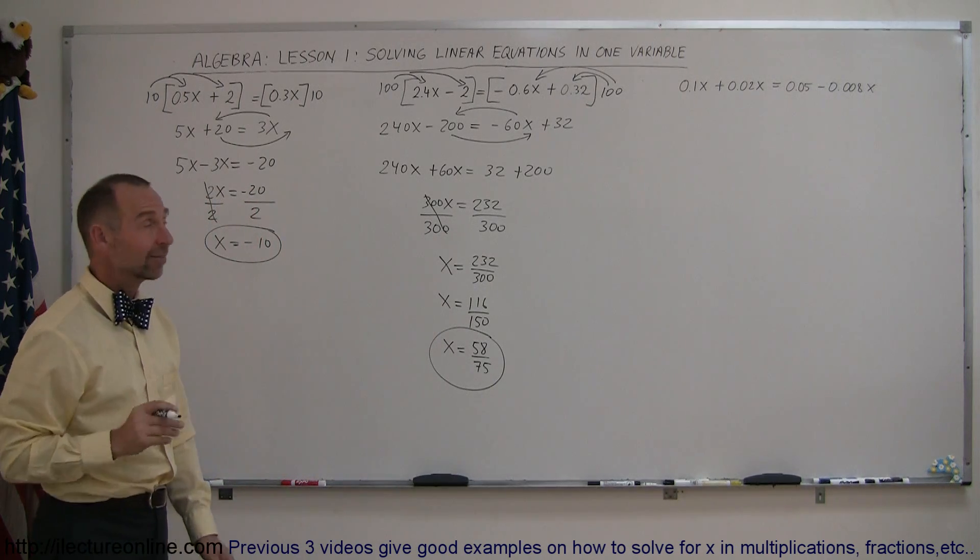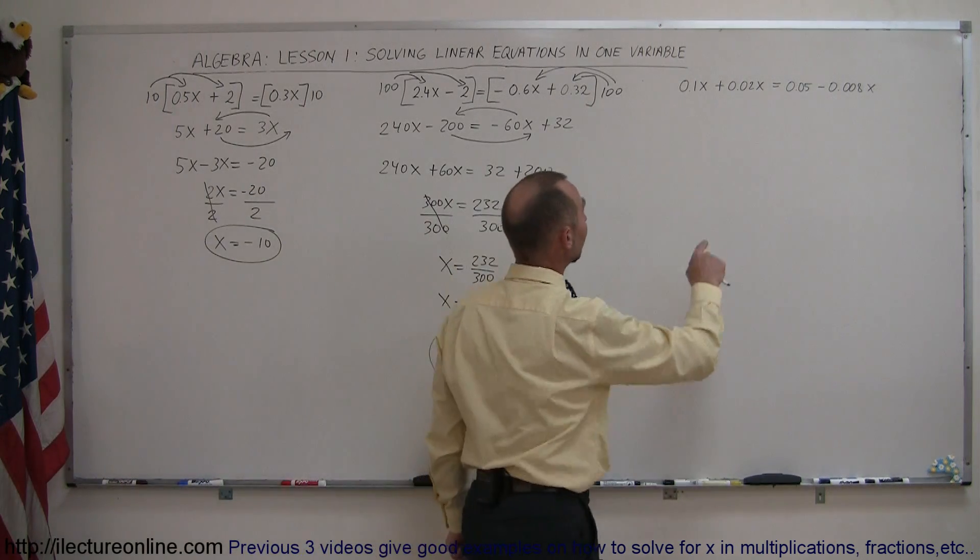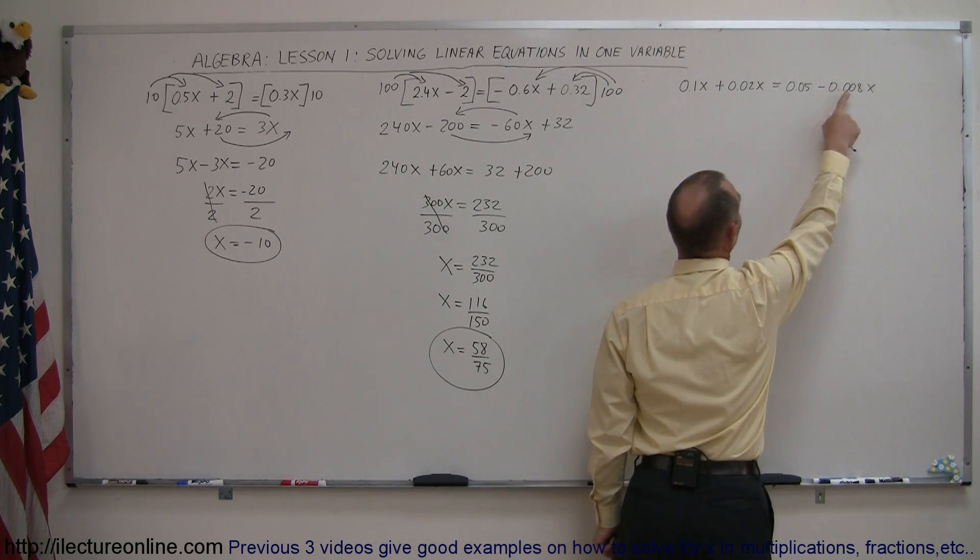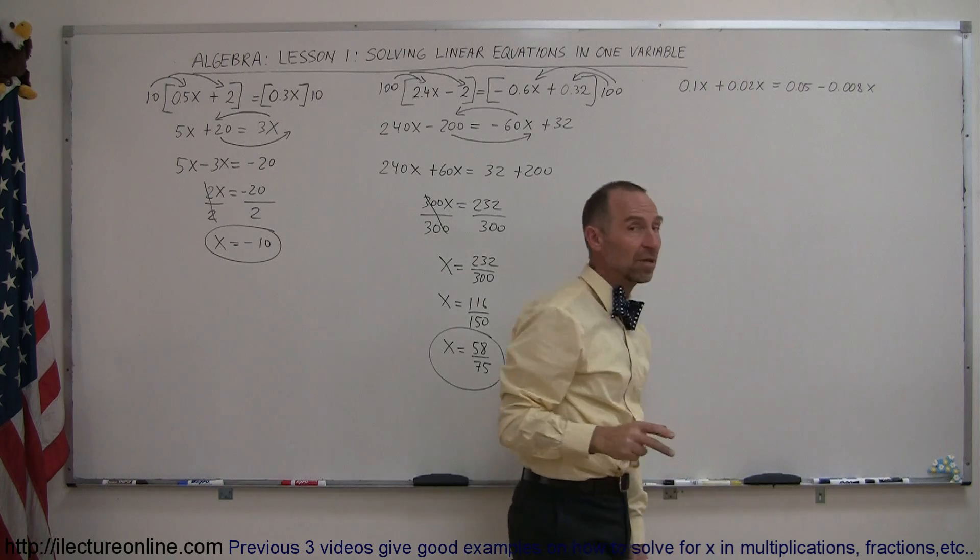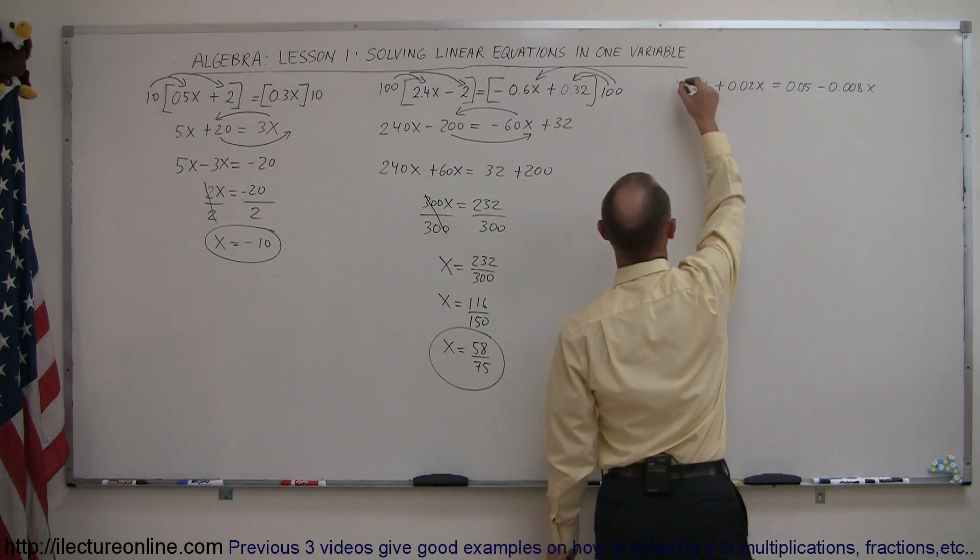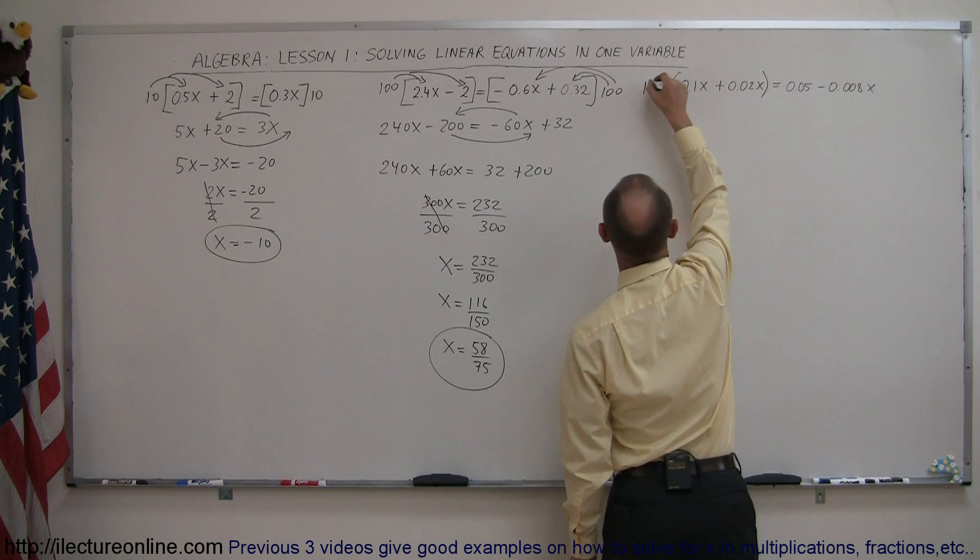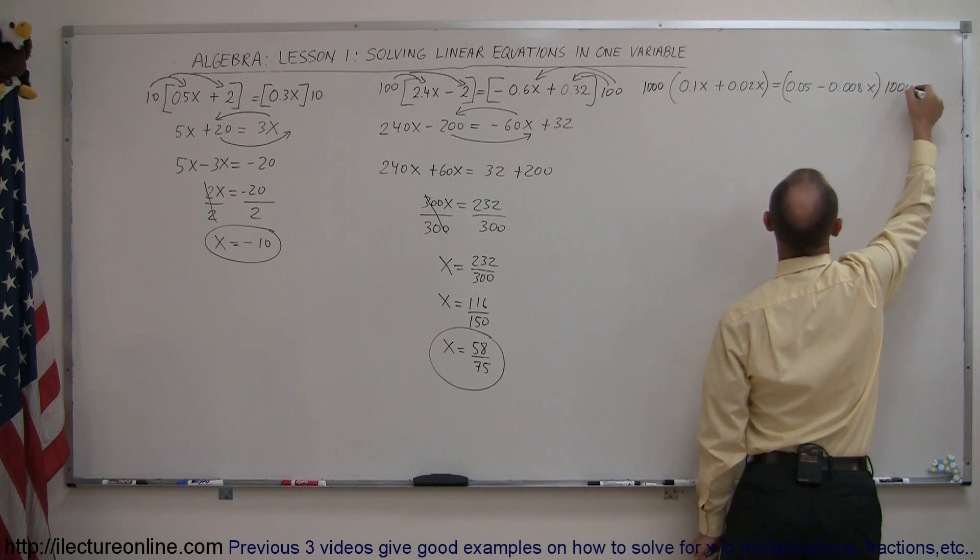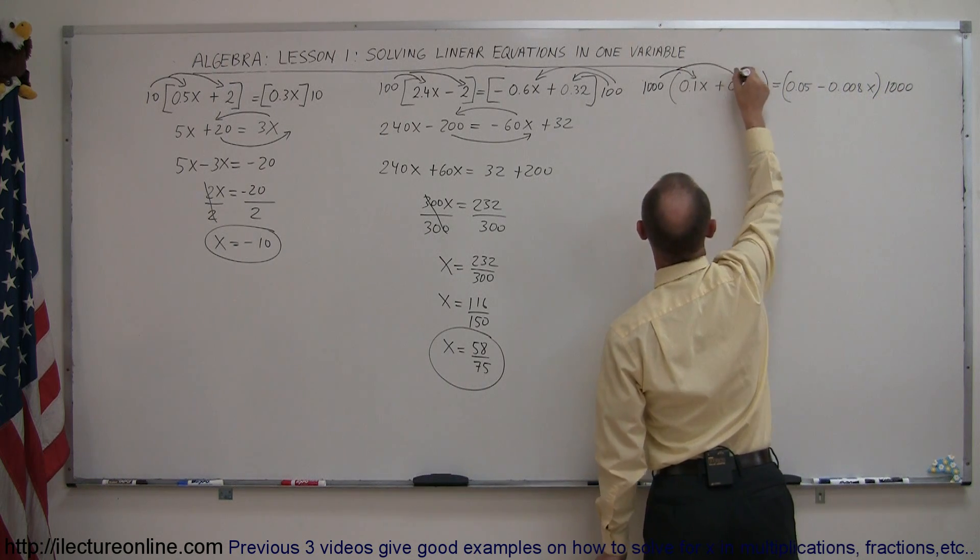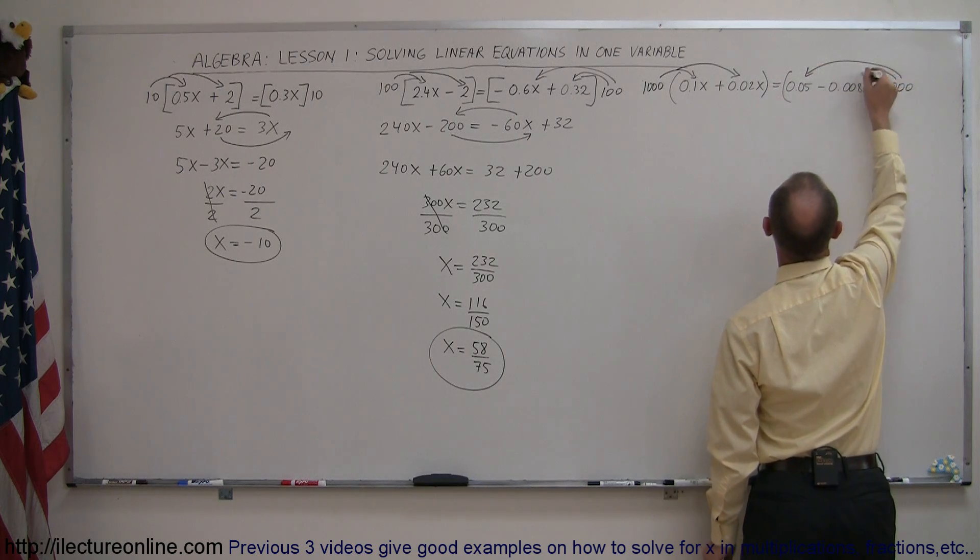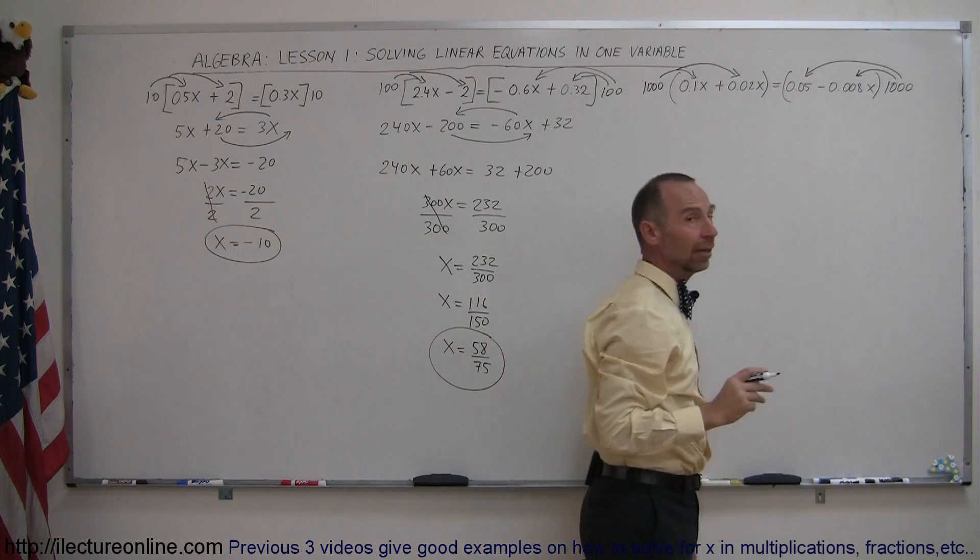Finally, going to our last example, notice that we have one decimal place here, two decimal places there, two decimal places there, and three decimal places there, which means we're going to multiply both sides of the equation by 1,000. So multiply the left side by 1,000, multiply the right side by 1,000. When we do that, we distribute the 1,000 over every term inside the parentheses here, we multiply the 1,000 over both terms inside the parentheses there.